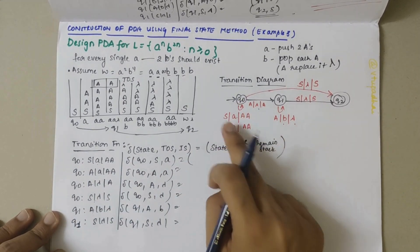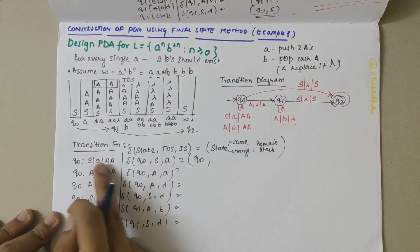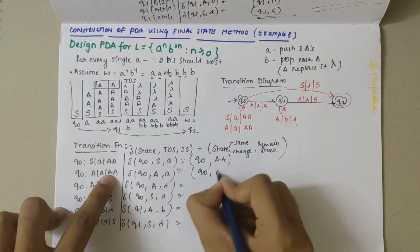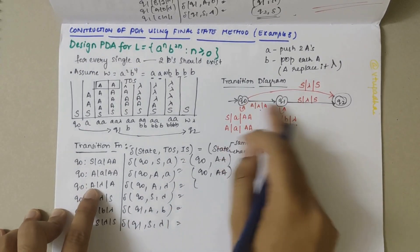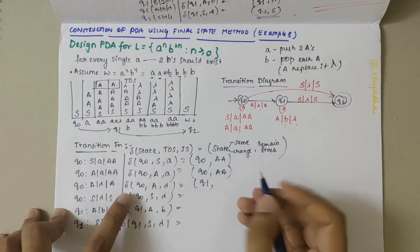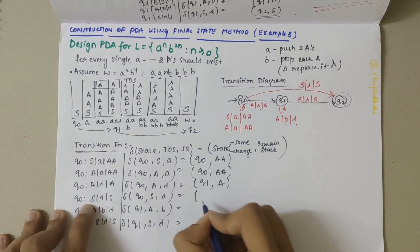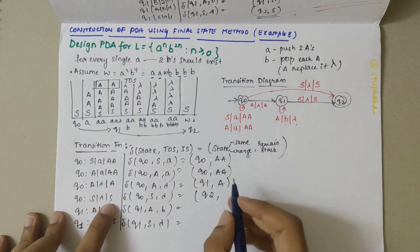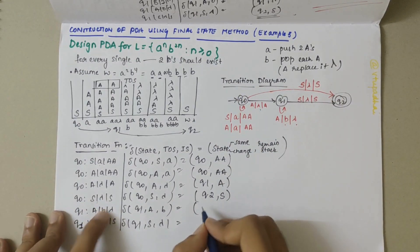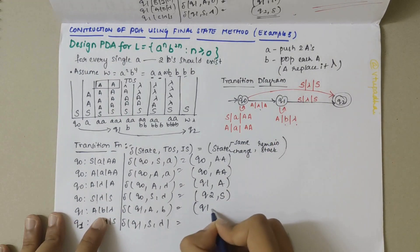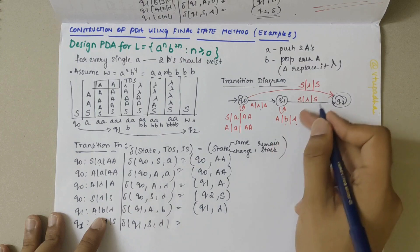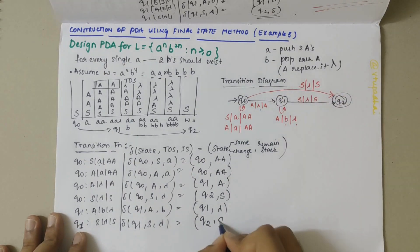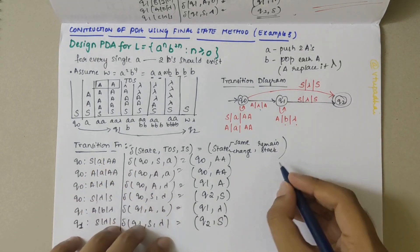For each transition function, I write the state, the top of stack, and the input string, which equals either the same state or a changed state, along with whatever remains on top of the stack. δ(Q0, S, A) → Q0, AA; δ(Q0, A, A) → Q0, AA; δ(Q0, A, λ) → Q1, A; δ(Q0, S, λ) → Q2, S; δ(Q1, A, b) → Q1, λ; δ(Q1, S, λ) → Q2, S. I am now done with the transition functions.